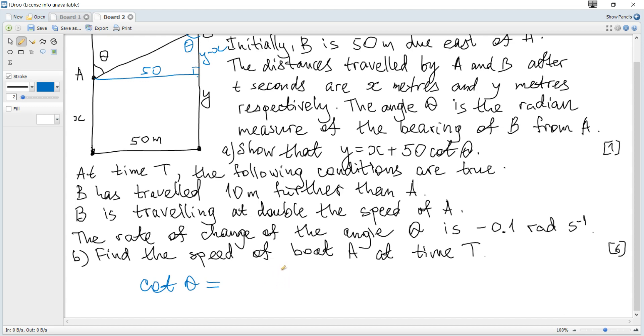Cotangent is adjacent leg over opposite leg. So it becomes y minus x over 50. And rearrange it to get that y is x plus 50 cotangent theta as required.